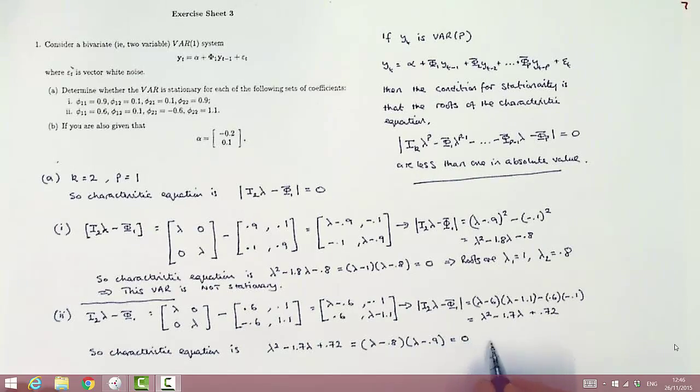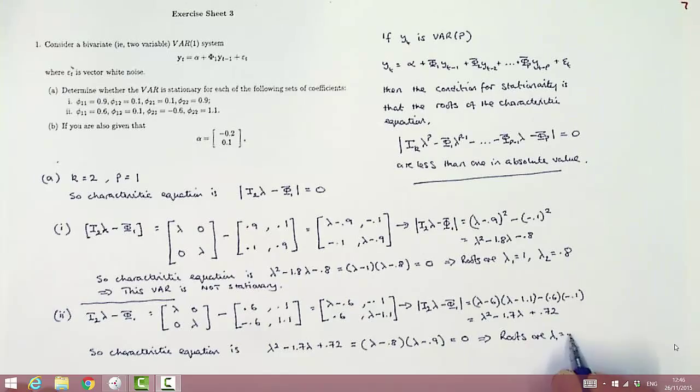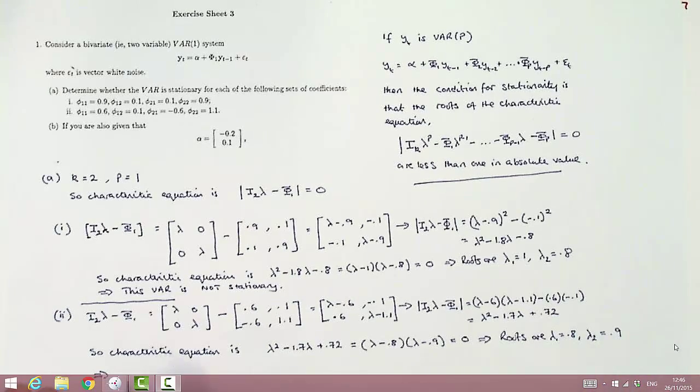And when we set that equal to 0, it's clear that the two roots of that equation are 0.8 and 0.9. The condition was that they had to be less than 1 in absolute value for the VAR to be stationary, and, of course, that's satisfied here. So this VAR is a stationary system.